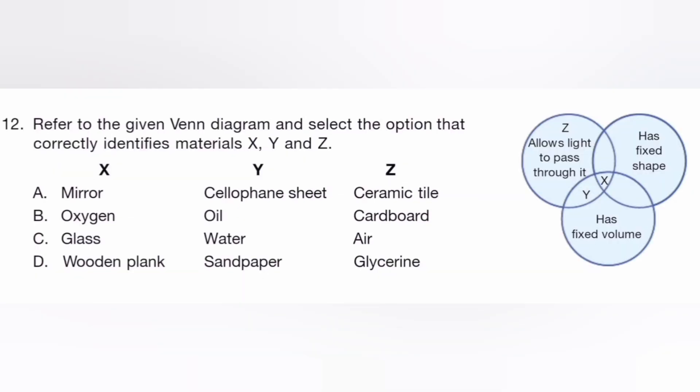Refer to the given Venn diagram and select the option that correctly identifies materials X, Y, and Z. The answer is C. X is glass, Y is water, and Z is air.